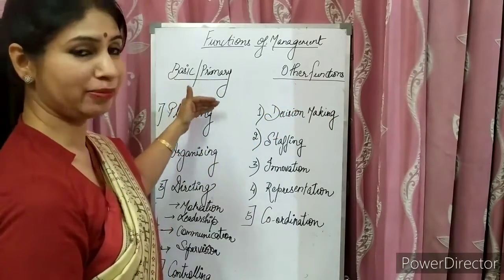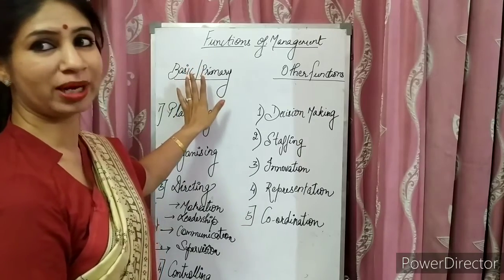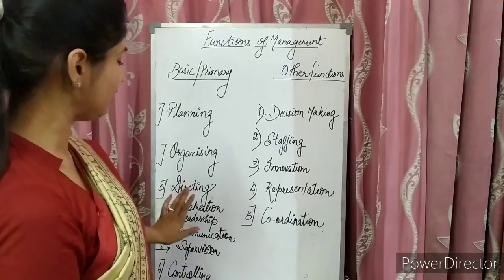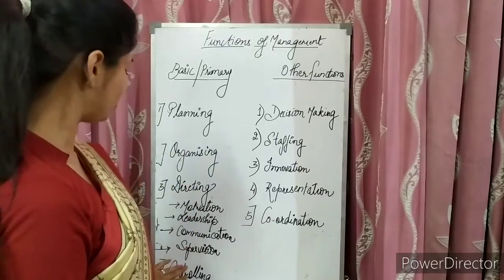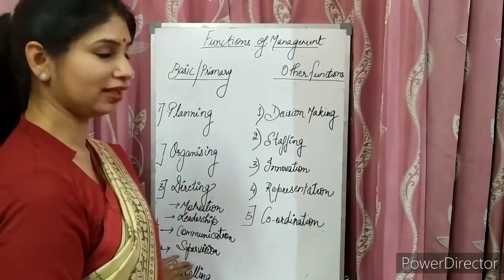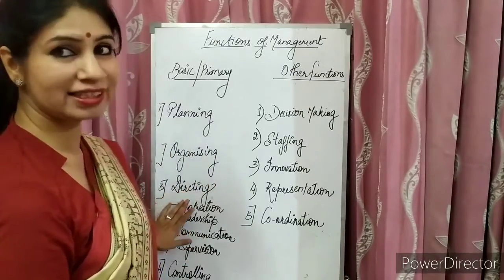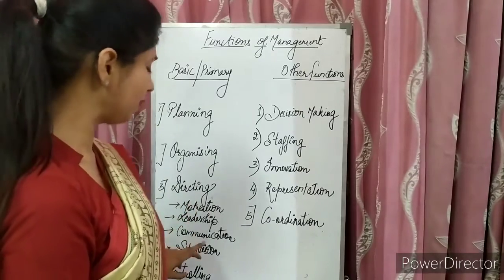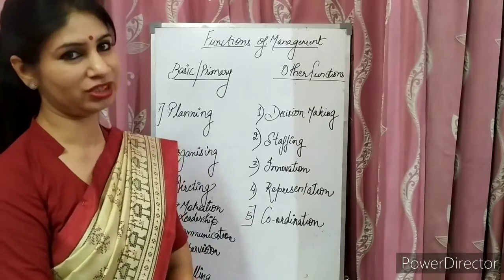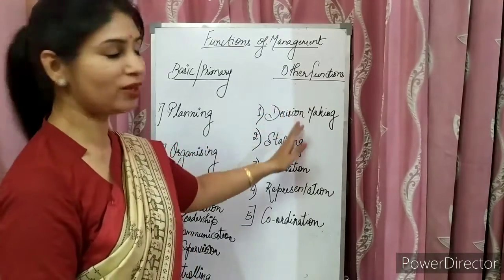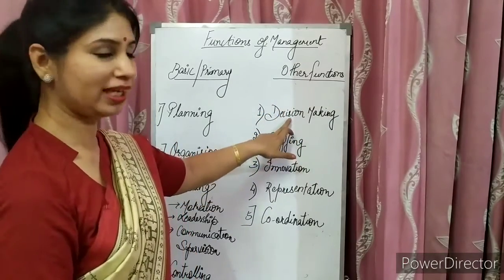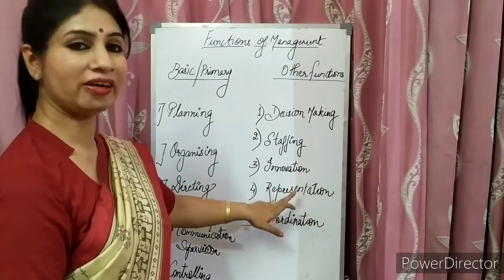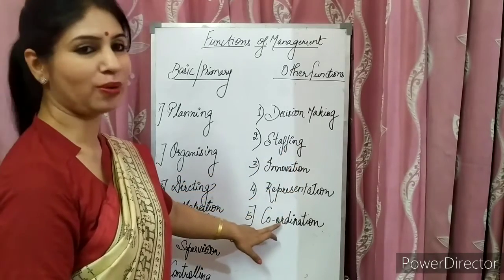Primary means main functions of management. First is planning, second is organizing, third is directing, and fourth is controlling. Directing is further divided into four parts: motivation, leadership, communication, and supervision. There are some other functions also: decision making, staffing, innovation, representation, and coordination.